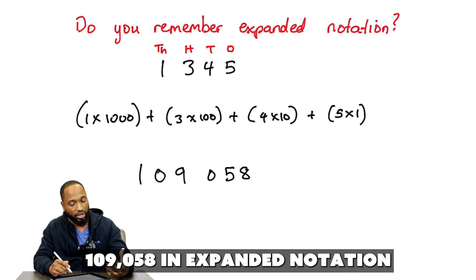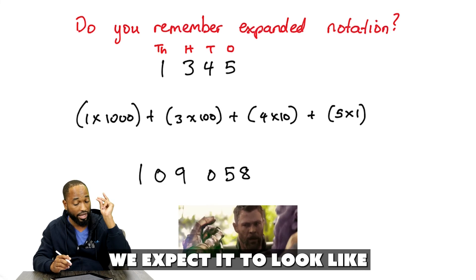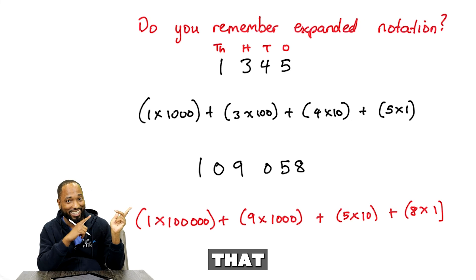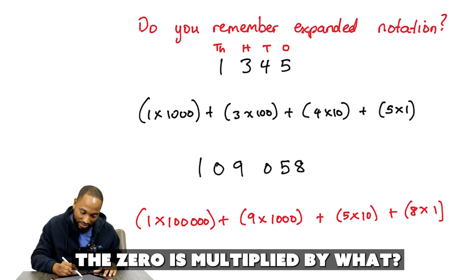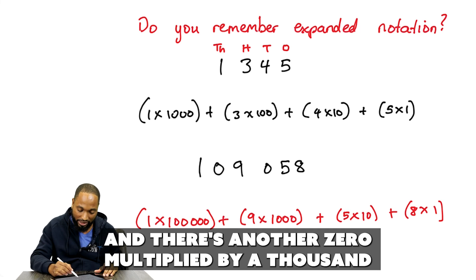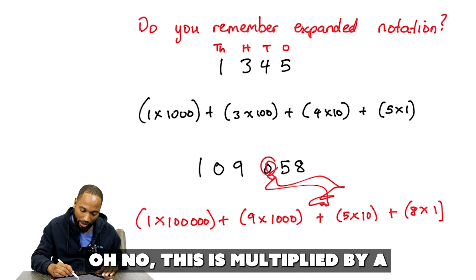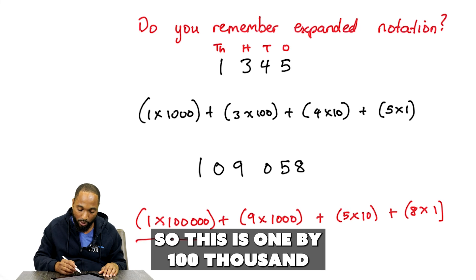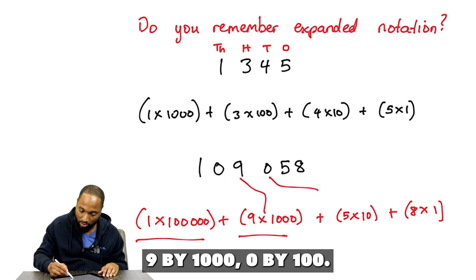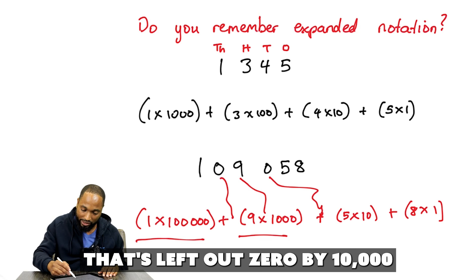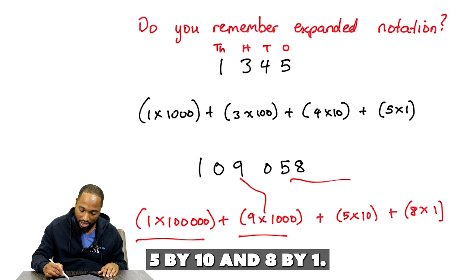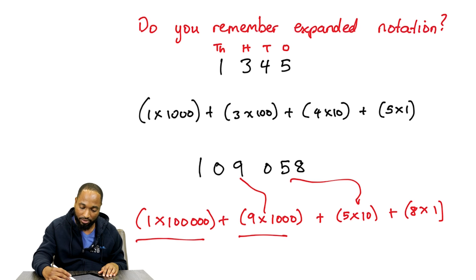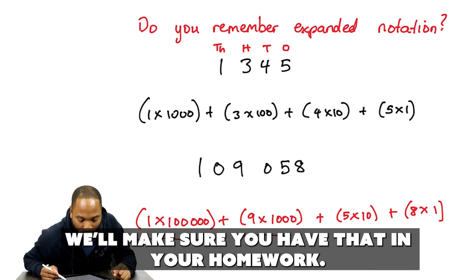What about this number? 109,058. In expanded notation, we expect it to look like that. And if you look at it, the 0 is multiplied by 10,000. So, I left that out. And there's another 0 multiplied by 100. I left that out as well. So, this is 1 by 100,000. 9 by 1,000. 0 by 100. That's left out. 0 by 10,000. That's left out. 5 by 10. And 8 by 1. So, make sure you know your expanded notation. We'll make sure you have that in your homework.